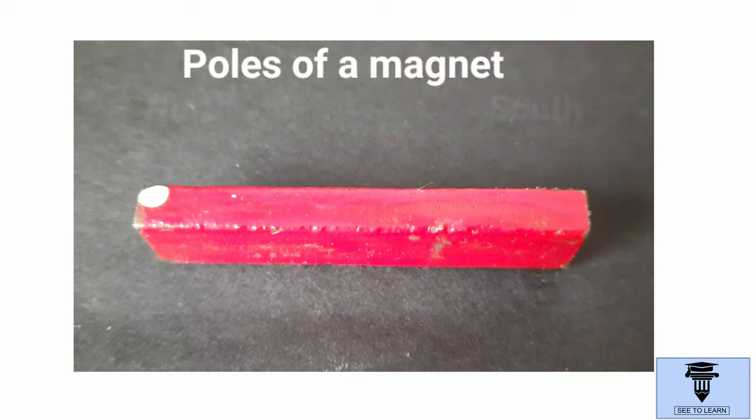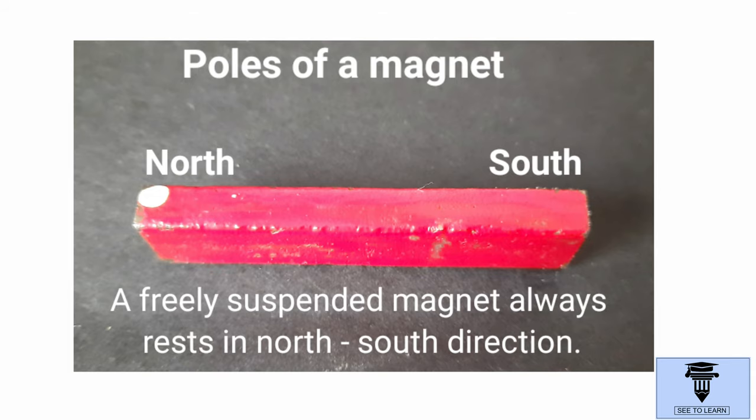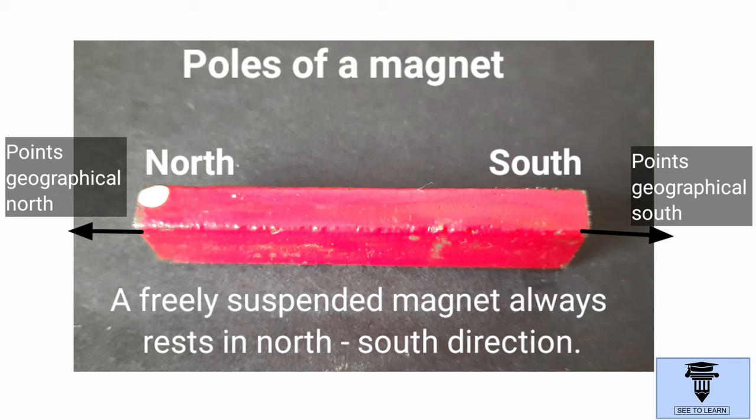Every magnet has two poles, north and south. Why are they called so? Because a freely suspended magnet always rests in north-south direction. The pole of the magnet pointing towards the geographical north is the north pole. And the pole of the magnet which points towards the geographical south is the south pole.